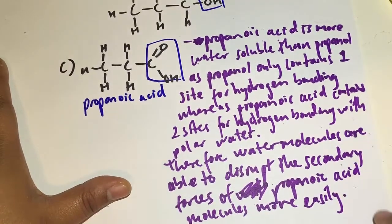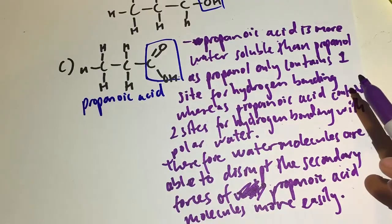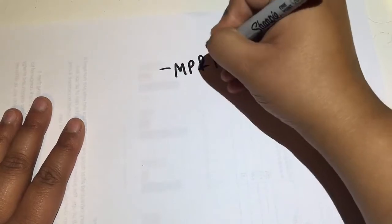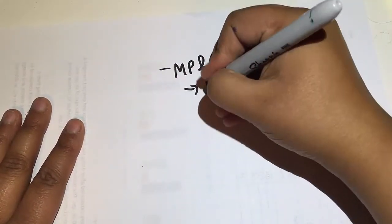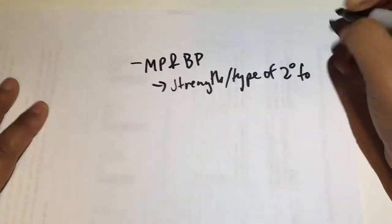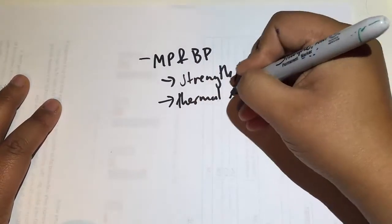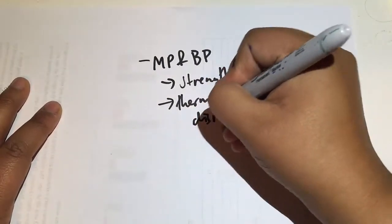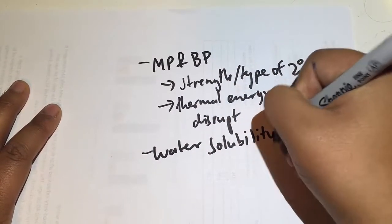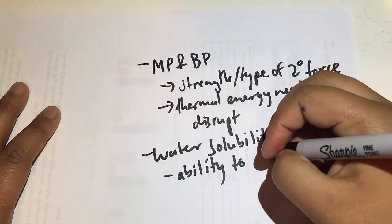This is normally a three or four mark question, so it's important to be clear on each point. To summarize: for melting point and boiling point, look at the strength and type of secondary force present and how much thermal energy is needed to disrupt it. For water solubility, it's all about the ability of polar water to disrupt the secondary forces between molecules — considering polarity and strength, molecular size, and the number of hydrogen bonding sites.